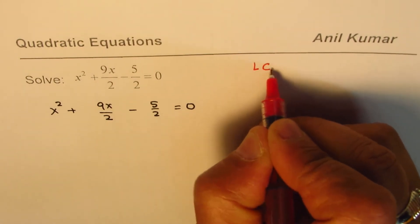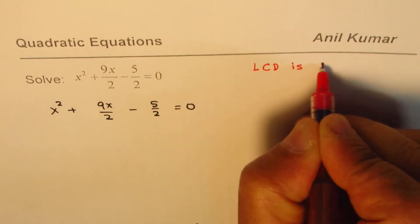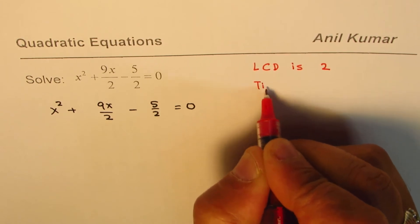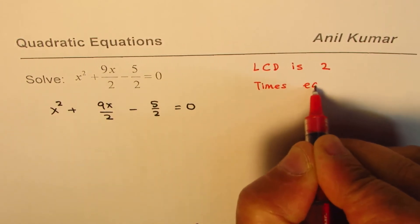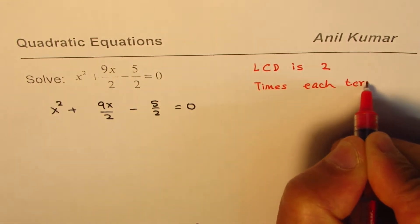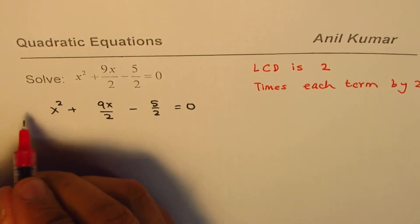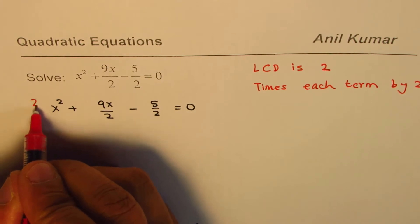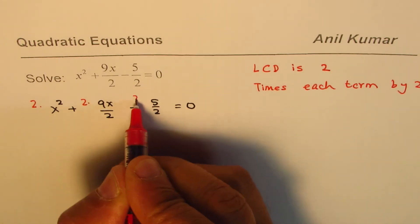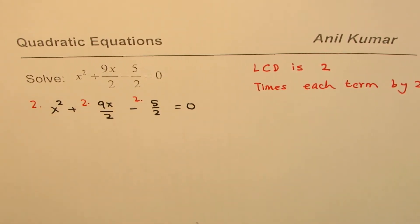In other words, the lowest common denominator is 2, so we'll multiply each term by 2. What we'll do is multiply each term by 2. That is the next step.